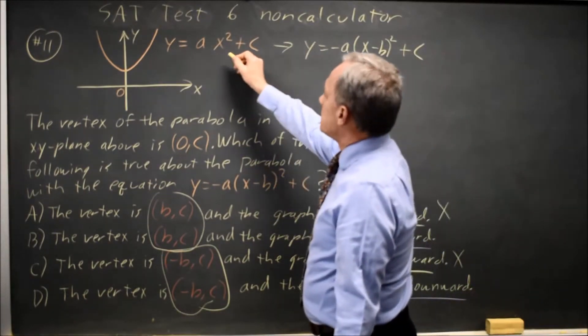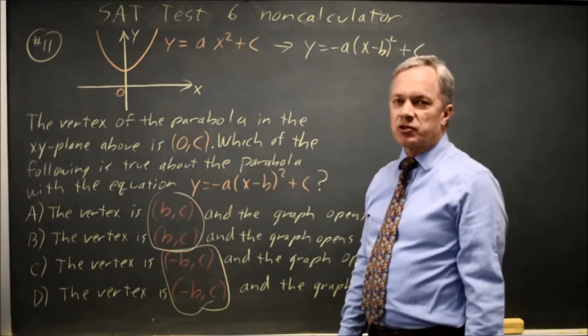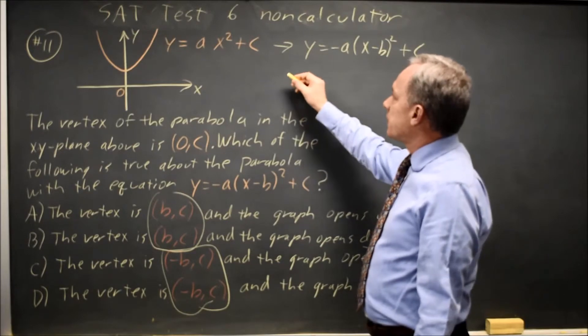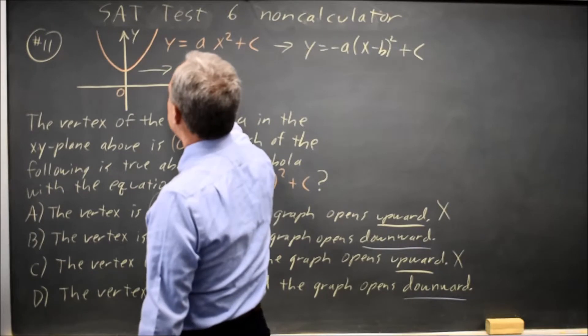What about replacing x with x minus b? When we studied translations of graphs, we found that replacing x with x minus b moves it to the right by b.